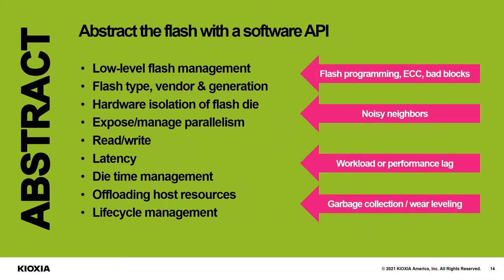All of the low-level Flash management — the programming of Flash cells, the voltages, the timings — is managed within the hardware through the API. This low-level management means Flash type, whether it's MLC, TLC, or QLC, is managed through the API and abstracted. Different generations — Gen 3, 4, and 5 — are all covered, as well as the possibility of different vendors, meaning a complete ability to use any type of Flash using the API. The API also handles the traditional noisy-neighbor problem: if one application is doing a lot of IO, you don't want that interfering with your particular application. You can isolate all the way down to the hardware to individual Flash die so that one noisy neighbor does not impact another. We'll be able to show you how that works in the demo a little later in this presentation.